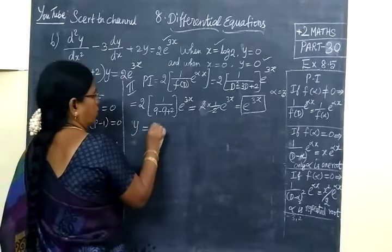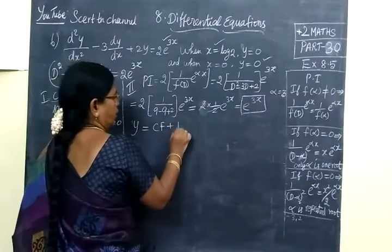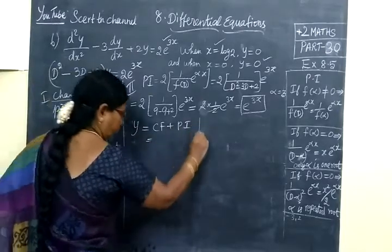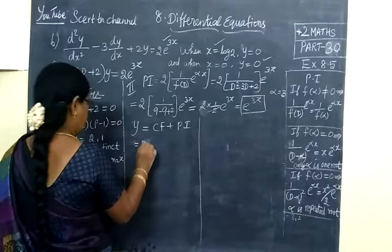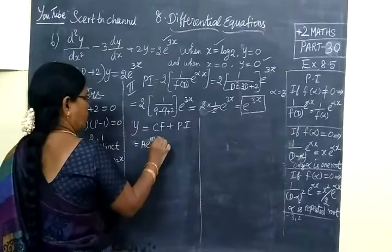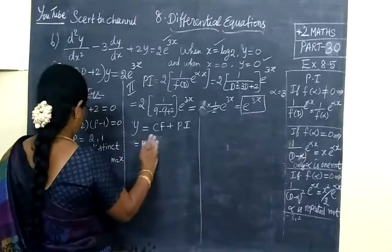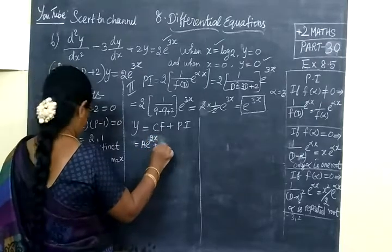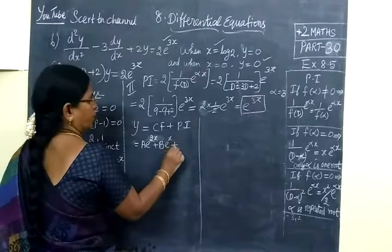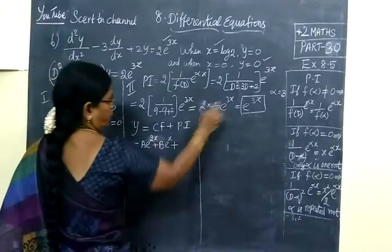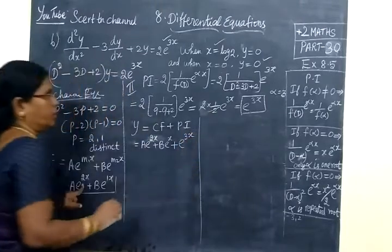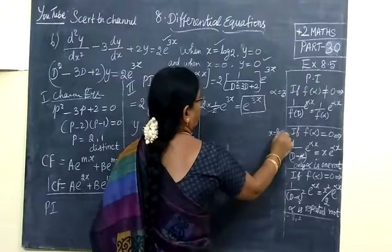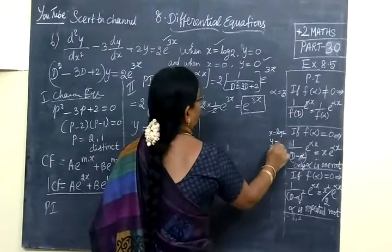So now solution is CF plus PI equal to Ae^(2x) plus Be^x plus e^(3x). Now the given condition is x = log 2, then y = 0. Now we are taking the first condition.